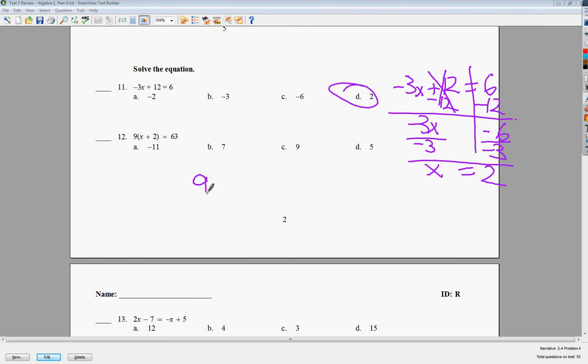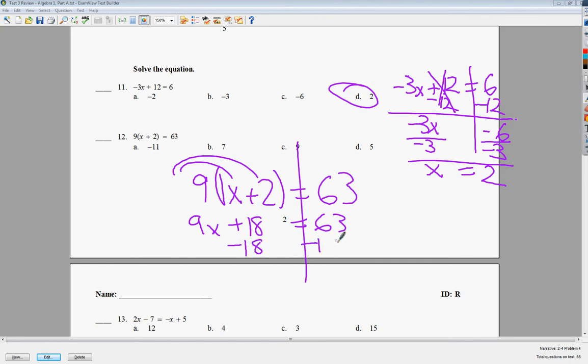Number 12. Same thing. It just has distributive property in it. This is a 1. So 9X plus 18 equals 63. Here's me. Here's friend. Here's friend to friend. Friend to friend has to go. Get rid of plus 18 by subtracting 18. These end up canceling themselves out, and then I just do 63 minus 18 here, which is 45. Bring down 9X. Divide both sides by 9, because 9X means multiply, and your final answer is 5. So your answer to number 12 is D.